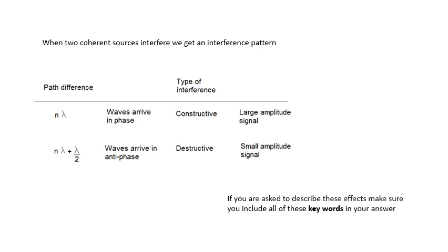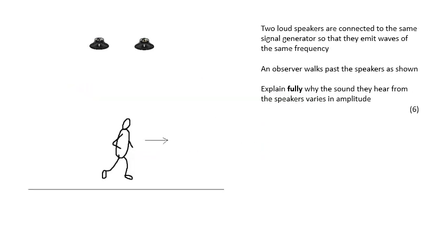It's very important — try and include all of these key words in your answer if there are loads of marks. For example, look at this six-mark question: two loudspeakers are connected to the same signal generator so that they emit waves of the same frequency. An observer walks past the speakers — explain fully why the sound they hear varies in amplitude. All of those key words: explain that these two sources are coherent, explain that in certain places the waves arrive in phase depending on the path difference, and what kind of interference results.